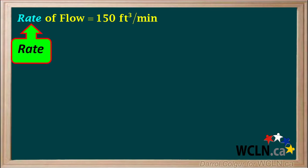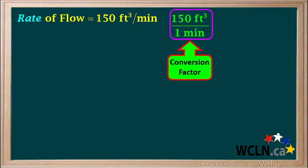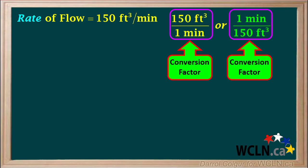Whenever we have some kind of rate in a question, we can make two conversion factors out of it. One possible conversion factor is a fraction with 150 feet cubed in the numerator and one minute in the denominator. If a conversion factor is valid, its reciprocal is also valid, so one minute over 150 feet cubed is also a valid conversion factor we can write given this rate.